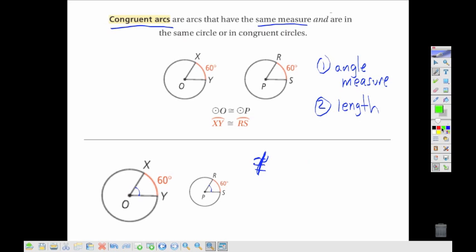We could also think maybe if I take this smaller circle, I might be able to just make it longer so that it actually has the same length, but because I have a different central angle, again, it would not be congruent.